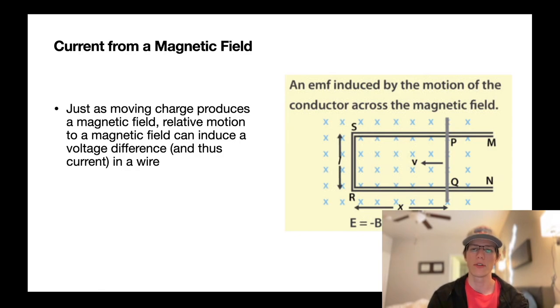Current from a magnetic field can also be generated from relative motion within that magnetic field. So a sliding wire there can generate a voltage difference and then obviously a current. You can see the formulas there beneath the picture.